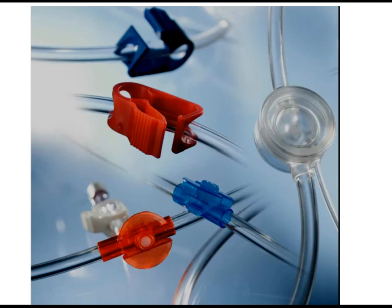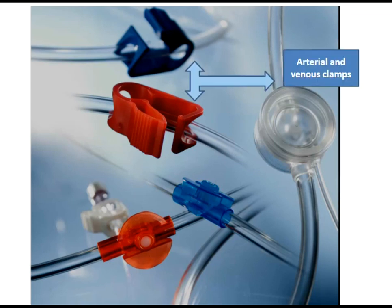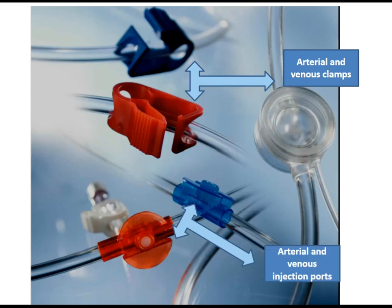On the blood line there are also arterial and venous clamps, as well as arterial and venous injection ports for injection of drugs, anticoagulation, and others.